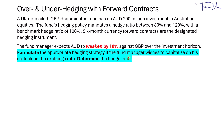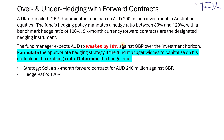In the next case, the manager has a view on how the Australian dollar would change against pound over the investment horizon. In the first scenario, the fund manager expects the Australian dollar to weaken by 10% against British pound. We will formulate the appropriate hedging strategy if the fund manager wishes to capitalize on this outlook and determine the hedge ratio. Given the Australian dollar would weaken, it makes sense to hedge by selling forward contracts, and given we are allowed to go up to 120%, we would want to over-hedge, setting the hedge ratio to 120%. So 120% times 200 million equals 240 million Australian dollars to short six months forward.